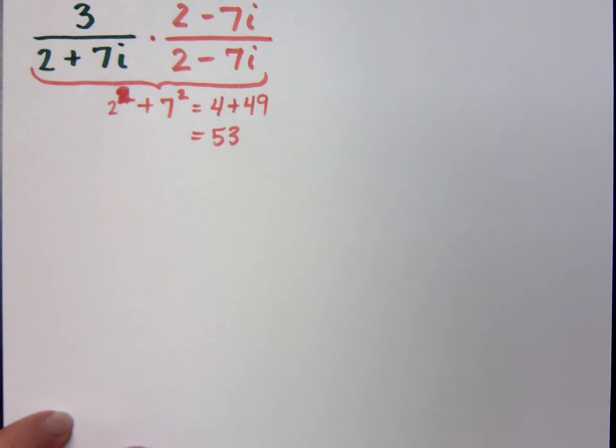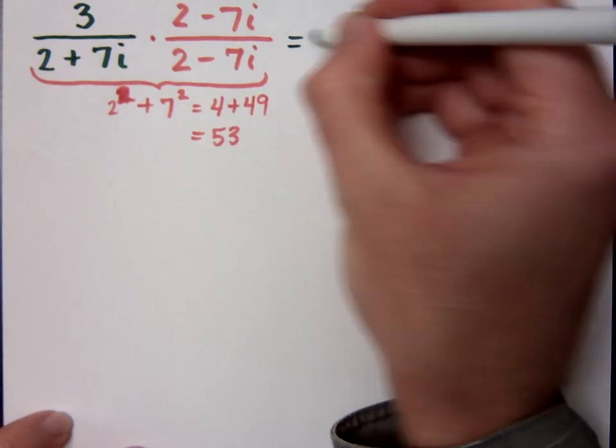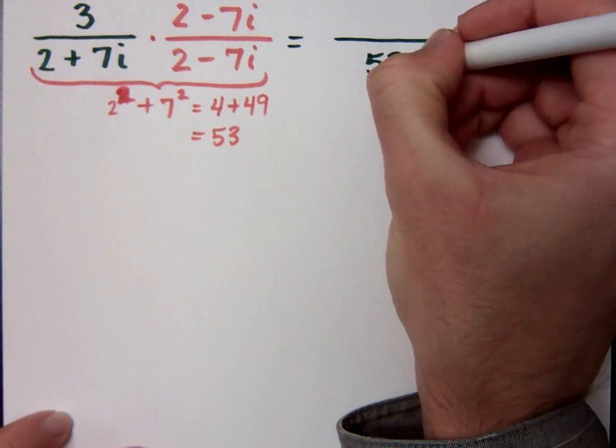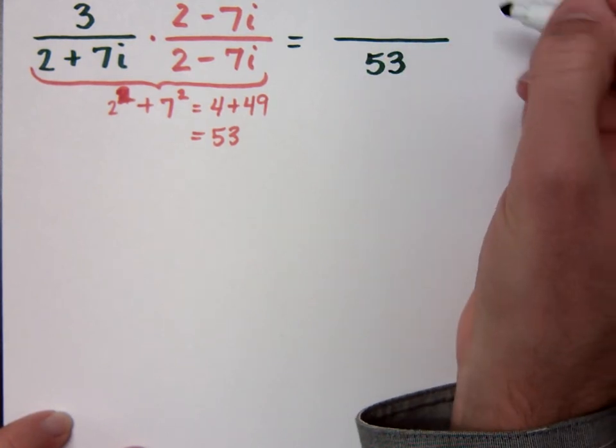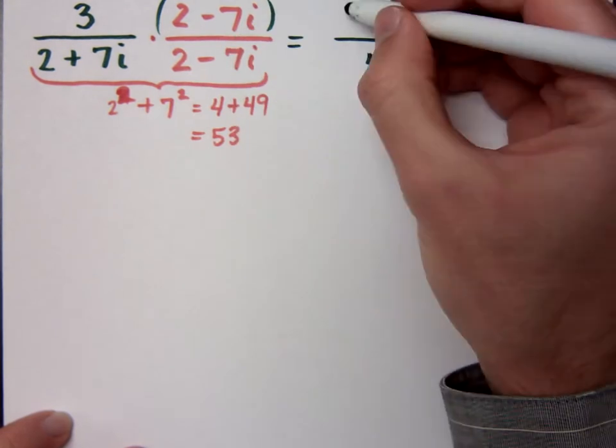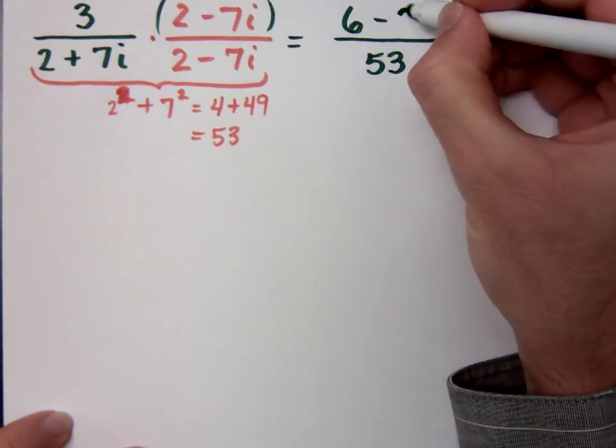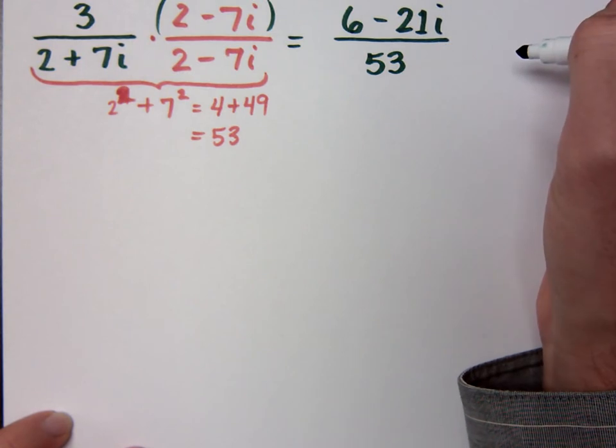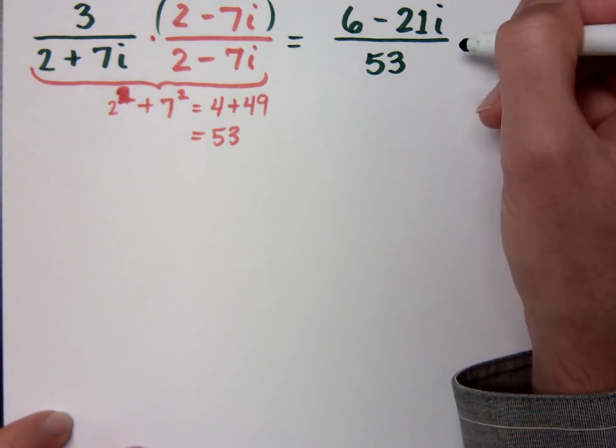The difference of squares with complex conjugates isn't a difference. It becomes a sum when the i squared sacrifices himself to turn the difference into a sum. Practice these guys, you're going to see this happen. So in my answer here, I've got a 53 for my denominator. What's my numerator? 6 minus 21i. 6 minus 21i, right? Now, I'm going to tell you right now that this answer is unacceptable to me.